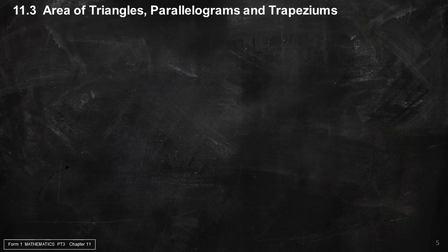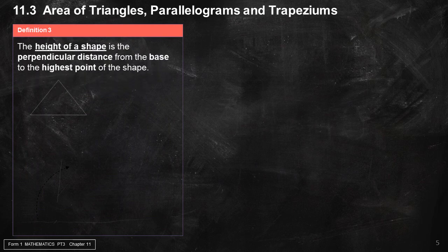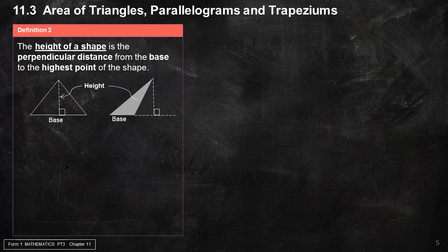11.3 Area of Triangles, Parallelograms, and Trapezium. Definition 3: The height of a shape is the perpendicular distance from the base to the highest point of the shape. Area of Triangle equals one-half times base times height.